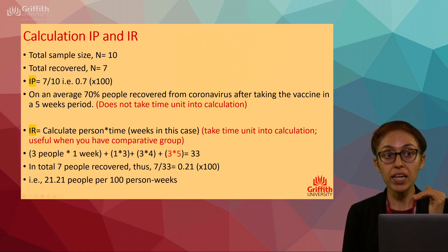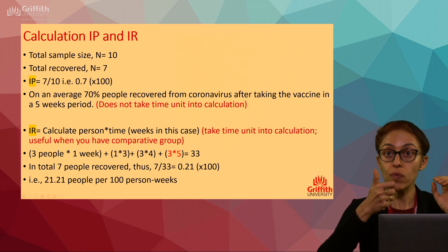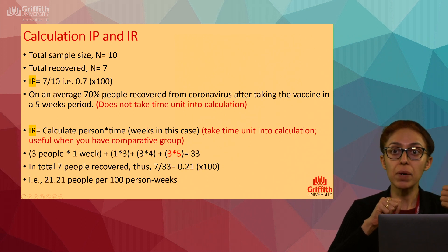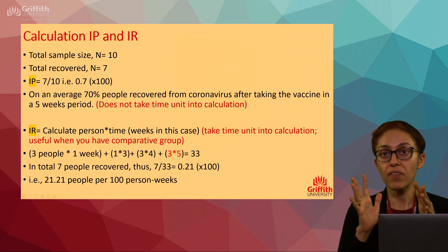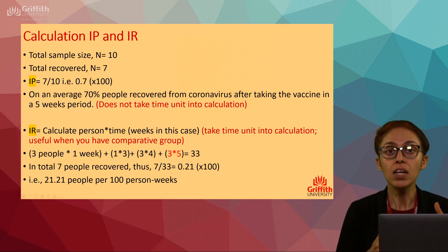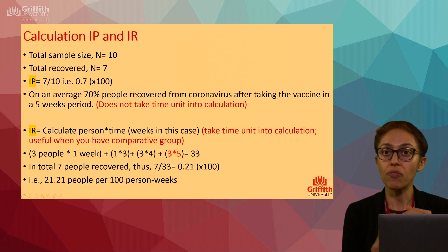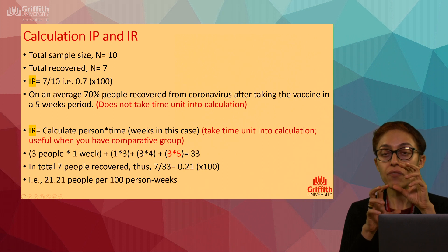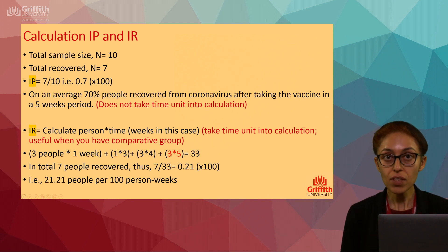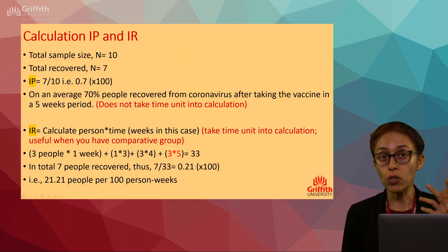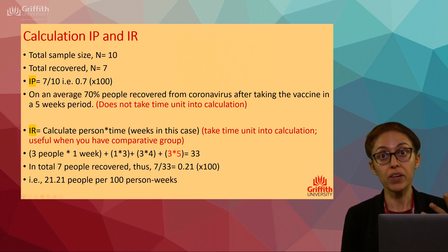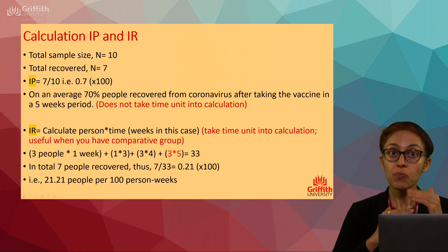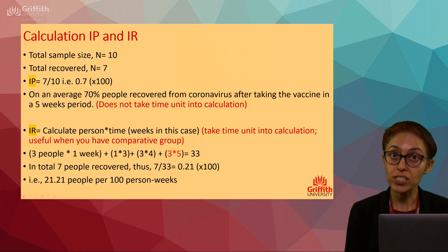This incidence rate approach is also useful when comparing two groups — for example, a coronavirus vaccine group versus a placebo group — to see the rate of recovery between them, or comparing Pfizer versus AstraZeneca to see which is superior.